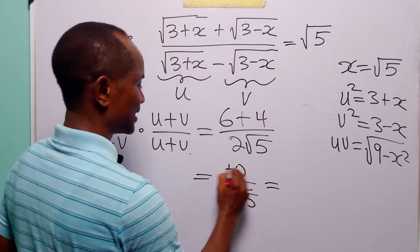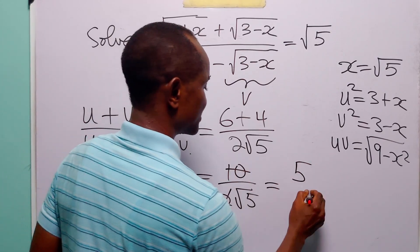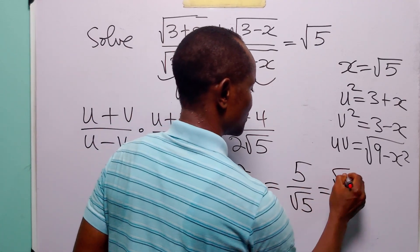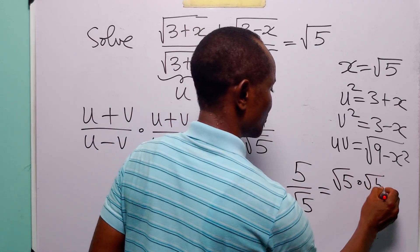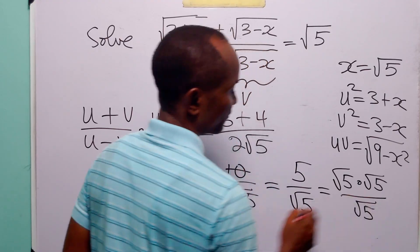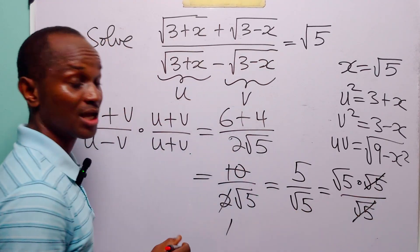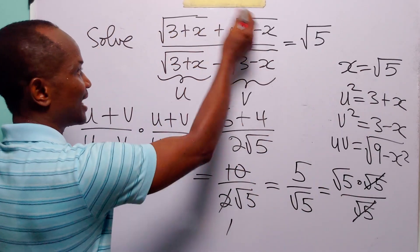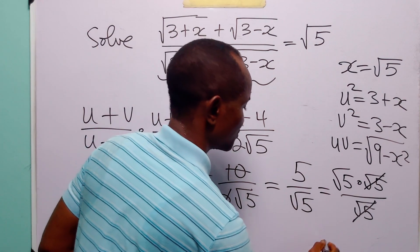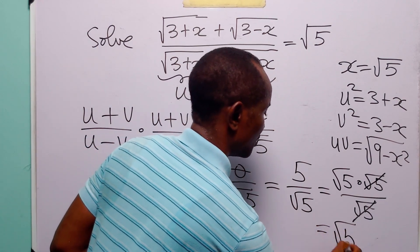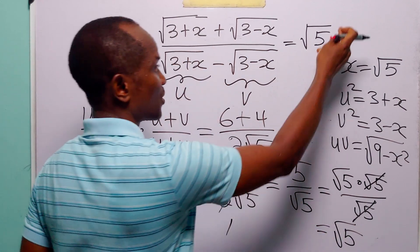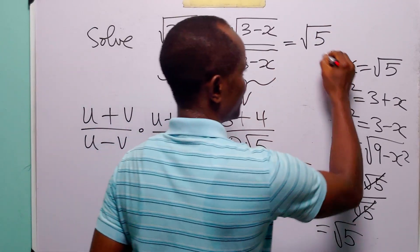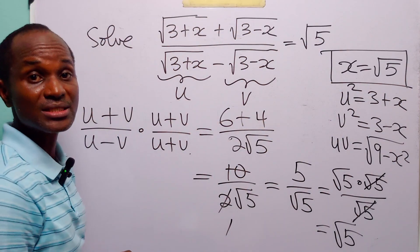So we have 10 divided by 2 root 5. Now 5 is equal to root 5 times root 5, so this simplifies to root 5. Thus when x equals root 5, the left hand side of this equation equals root 5, which is exactly what we have on the right hand side. This confirms that x equals root 5 satisfies the equation.